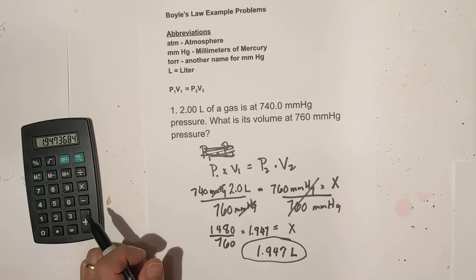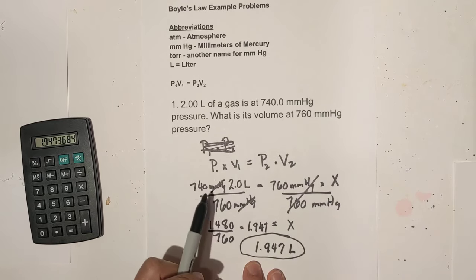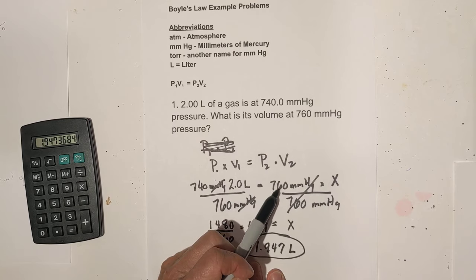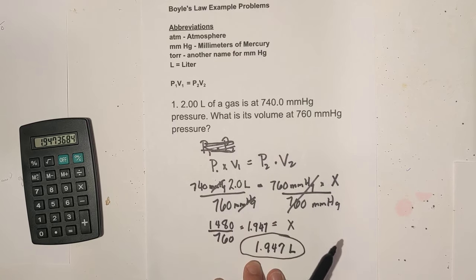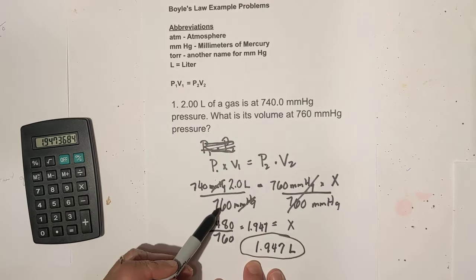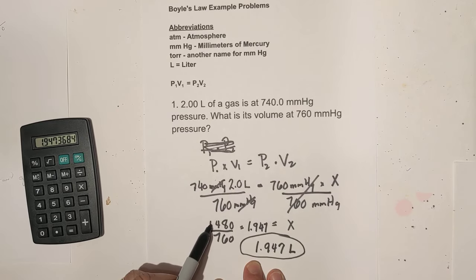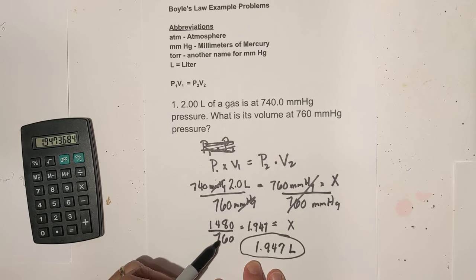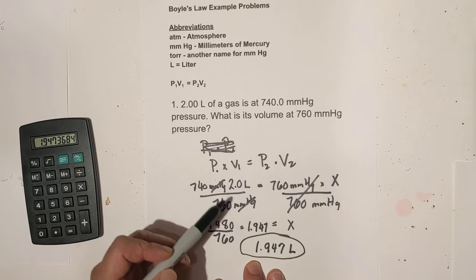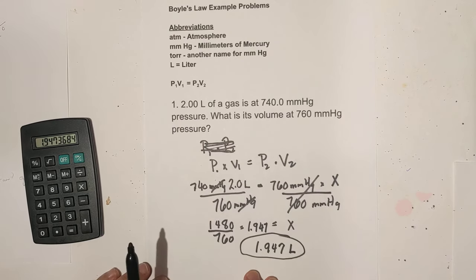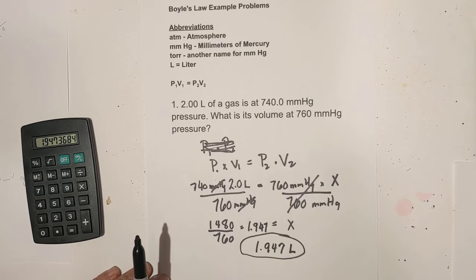But before we go to our next problem, let's recap what we did. We went ahead and wrote P1, 740, 2 is the volume. P2 is 760. The volume is missing. We divided both sides by 760. We took 740 times 2, that's 1480, and then we divided that by 760, and that gave us 1.947. And the unit, since it is asking for volume, is liters.